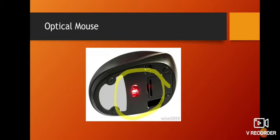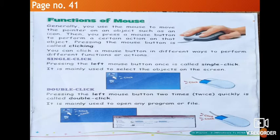So, there are two types of mouse: ball mouse and optical mouse. Next, on page number 41, we will study the functions of the mouse.